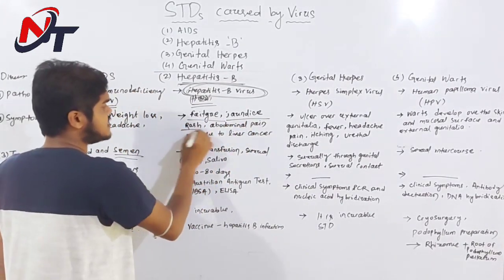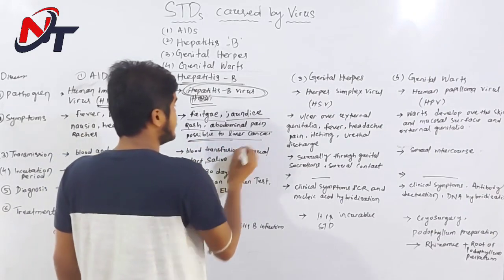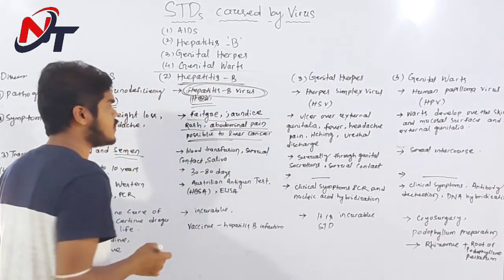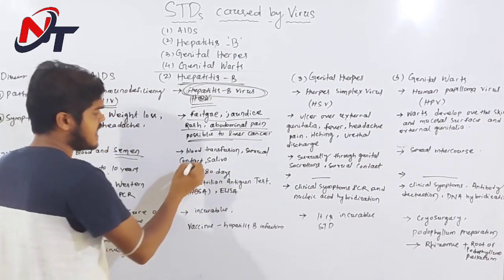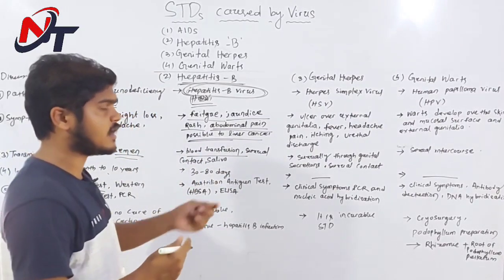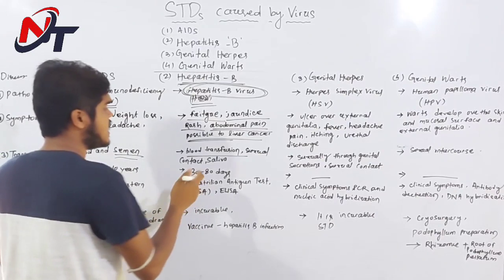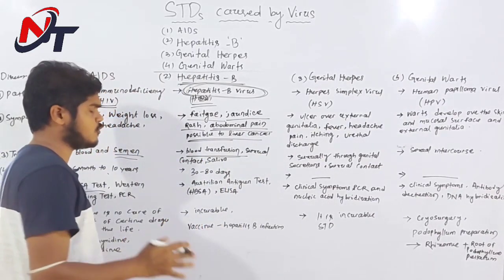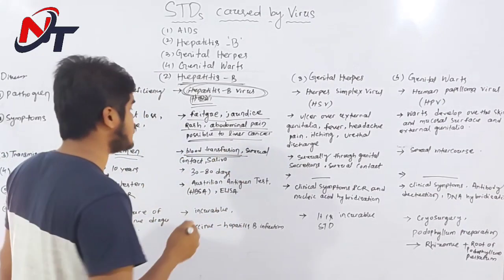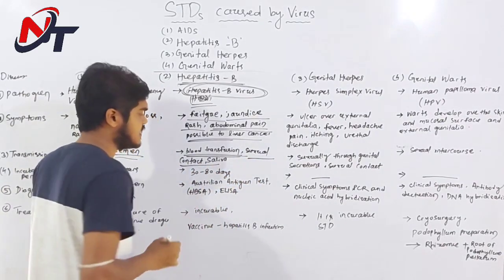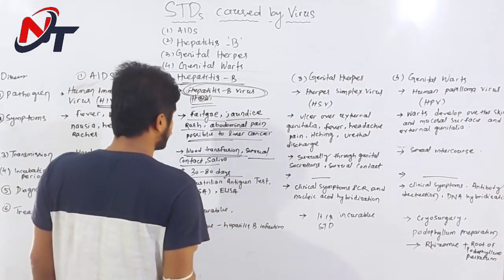The symptoms of hepatitis B include abdominal pain. Transmission occurs through blood transfusion — if the blood is contaminated with hepatitis B. It is also a sexually transmitted disease, transmitted through sexual contact.